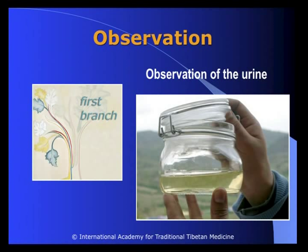The second part of observation is the observation of urine, which is very unique and typical to Tibetan tradition. We collect the patient's urine and check it for nine different aspects: the color of the urine, the steam, the bubbles, the smell, the sediments, how the urine changes as it cools, the duration of cooling, and the color when the urine is completely cold.